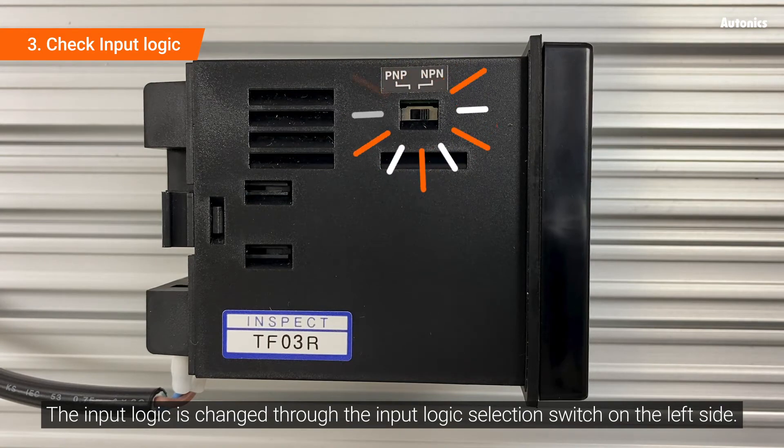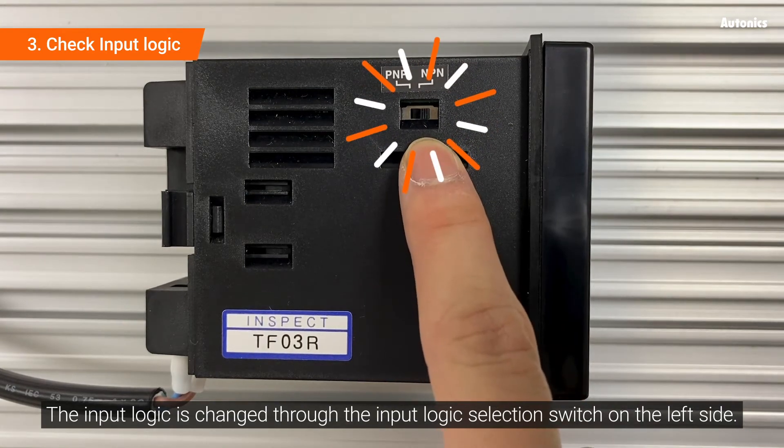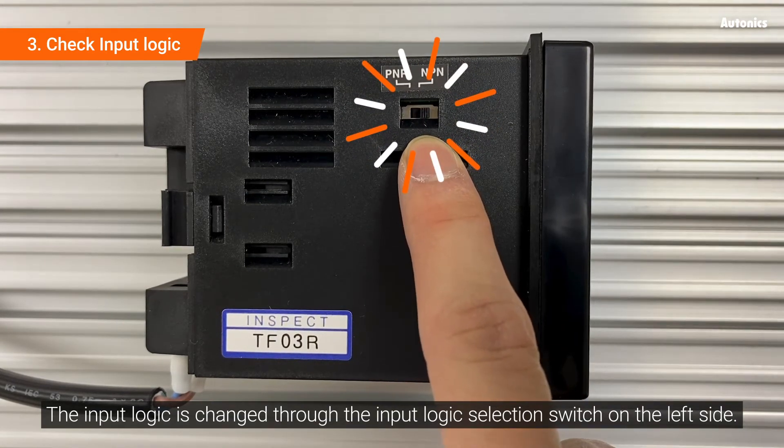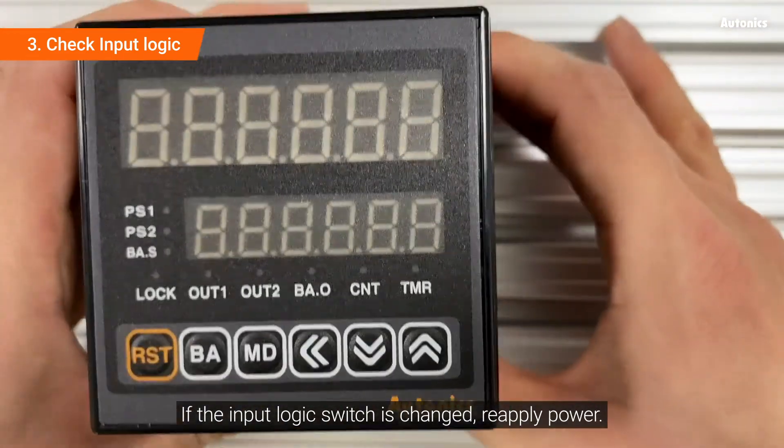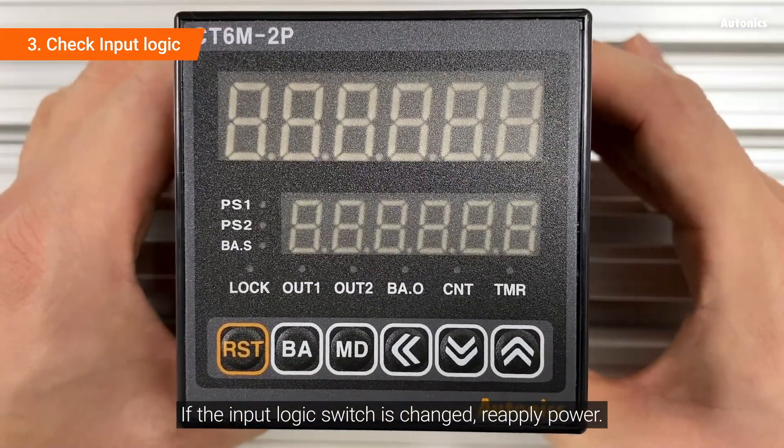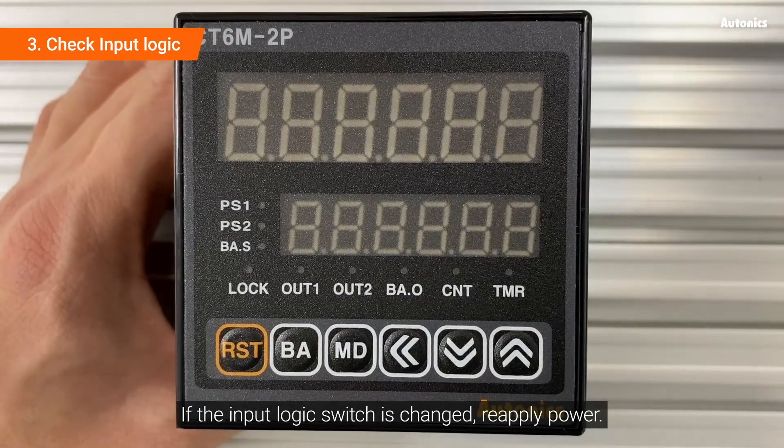Check the input logic through the SIG parameter. The input logic is changed through the input logic selection switch on the left side. If the input logic switch is changed, reapply power.